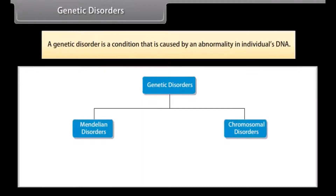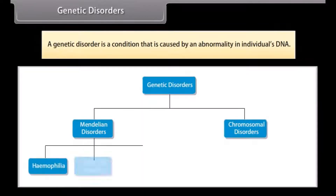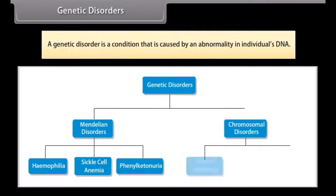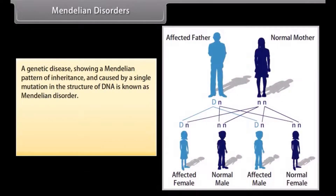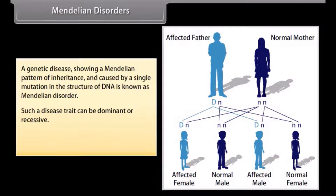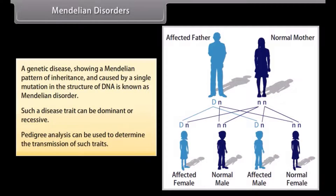Genetic Disorders. A genetic disorder is a condition caused by an abnormality in an individual's DNA. A genetic disease showing a Mendelian pattern of inheritance and caused by a single mutation in the structure of DNA is known as a Mendelian disorder. Such a disease trait can be dominant or recessive, and pedigree analysis can be used to determine the transmission of such traits.